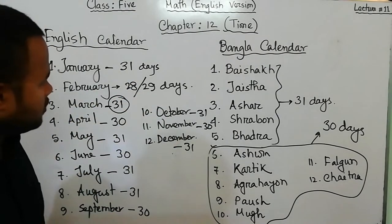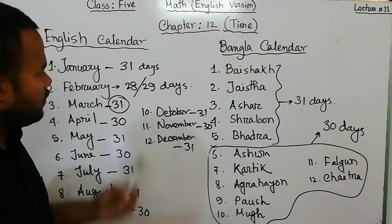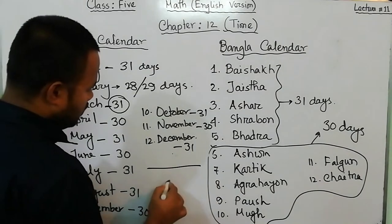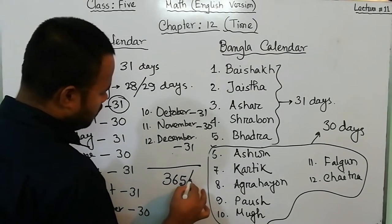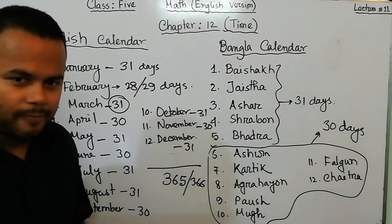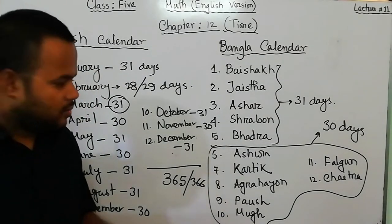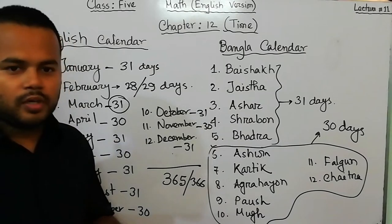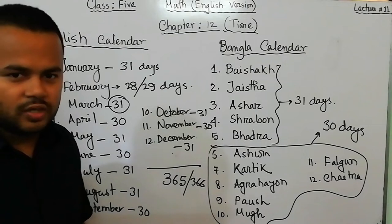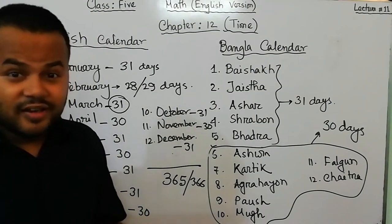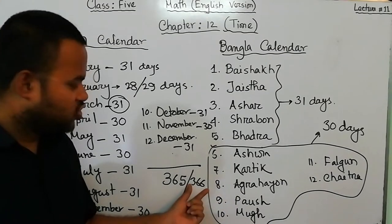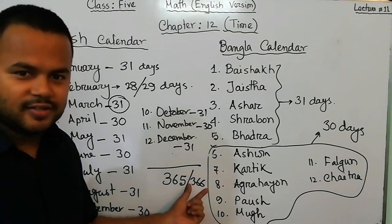If we add the days of each month, we will have a total of 365 or 366 days in a year. Generally we count 365 days in a year. When the year is a leap year, it consists of 366 days.